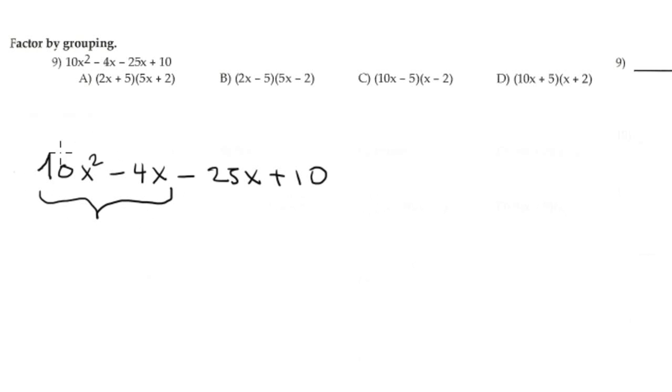Let's see the first couple. What is the GCF in the first couple? It's 2x. Open parenthesis, you put the remaining part, which is 5x minus 2.